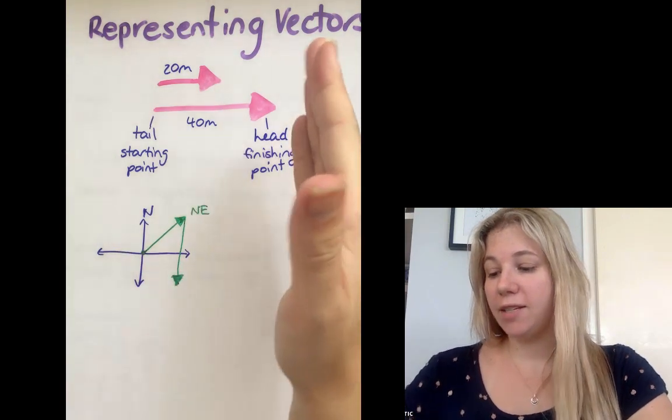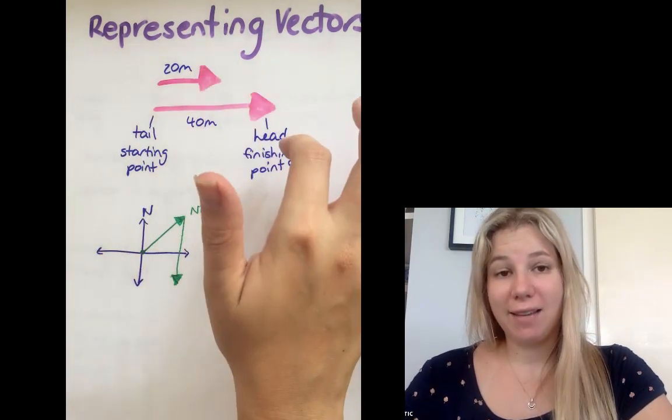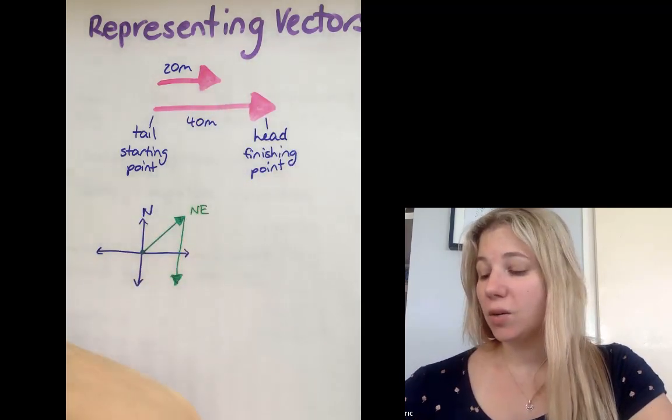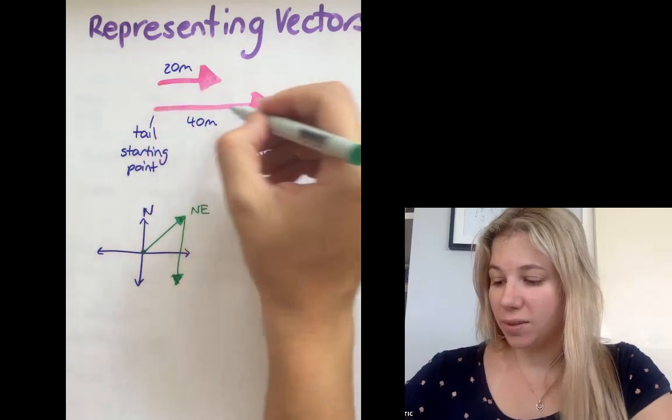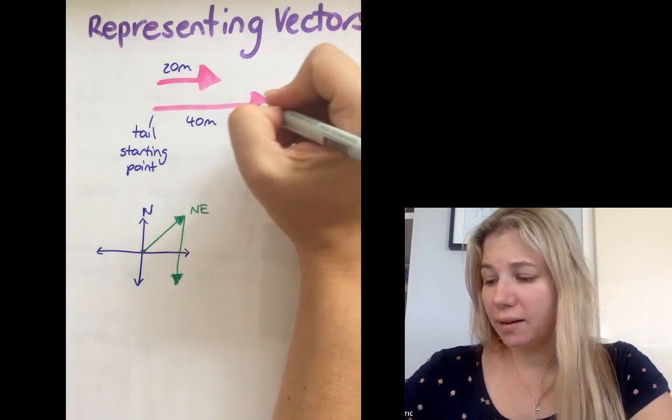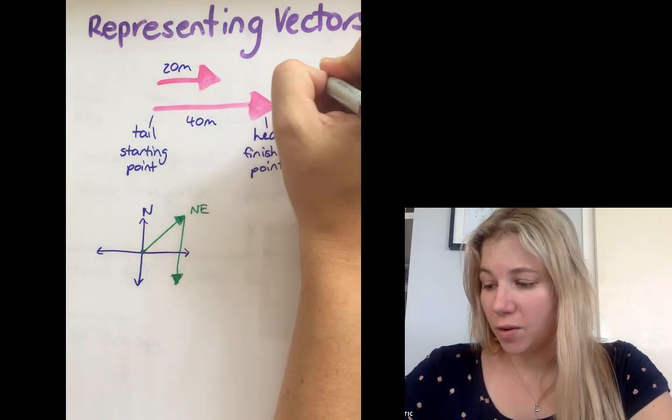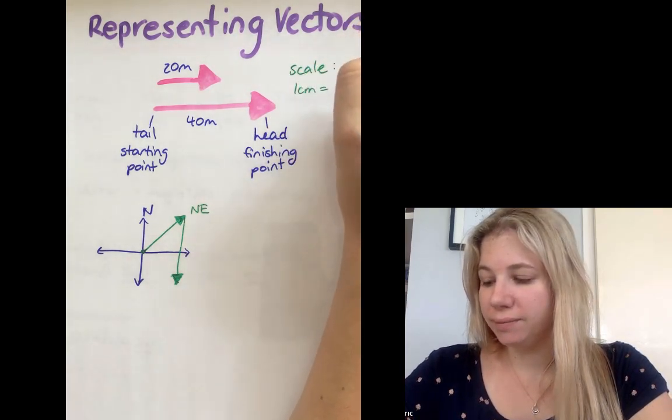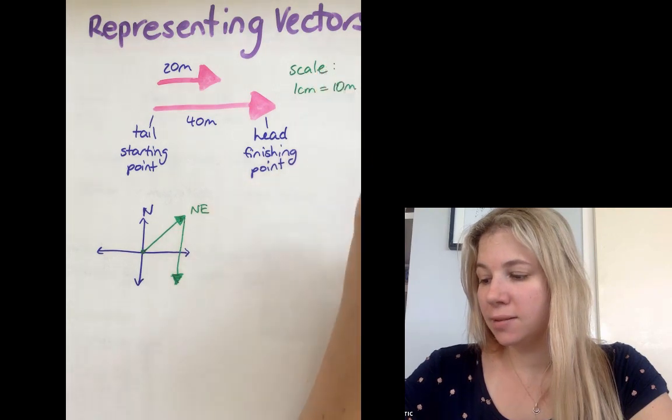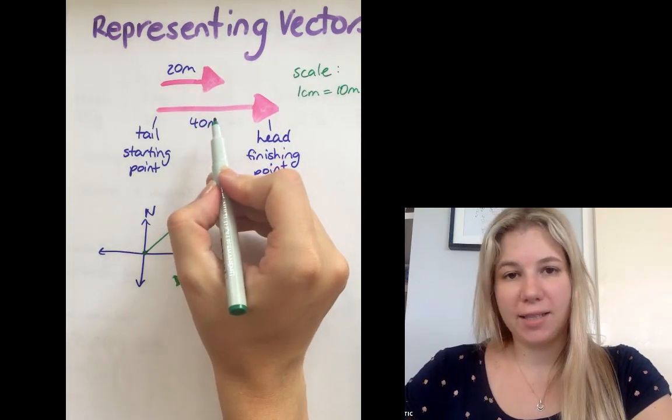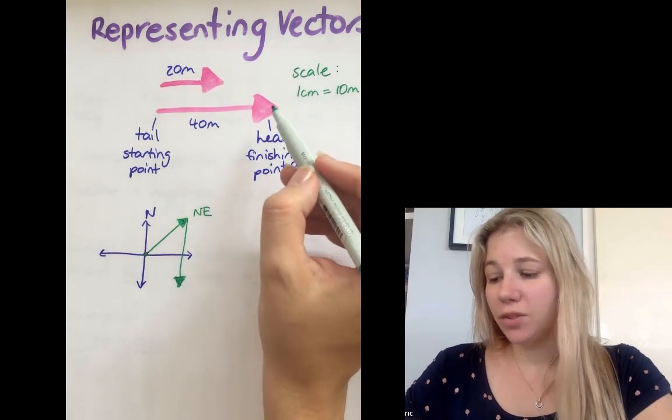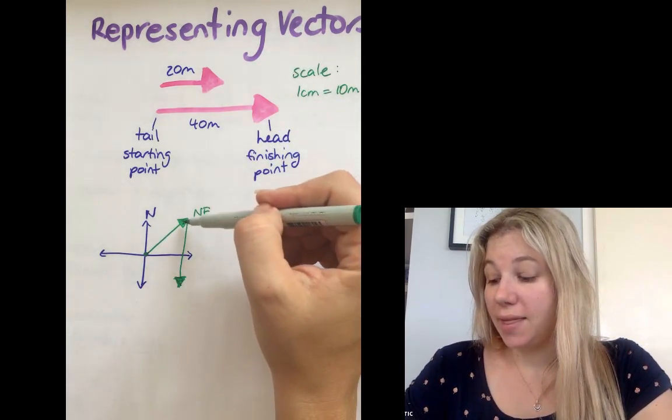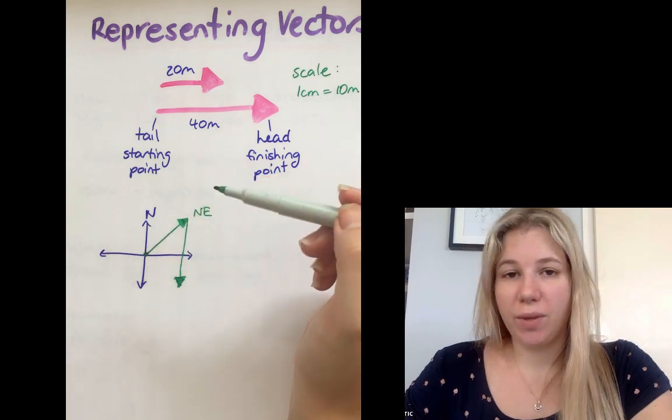When we represent vectors, it's important to remember that we use an arrow with a tail and a head. The size of the arrow is important. In fact, often you'll see it with a scale. Let's say that this was our vector here, you might have a scale up here that says one centimeter equals 10 meters, rather than writing it next to the arrow. So it's important to remember that you are drawing to scale and that we also need to show direction with our vectors as well.